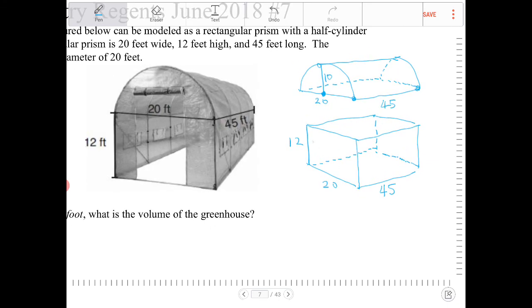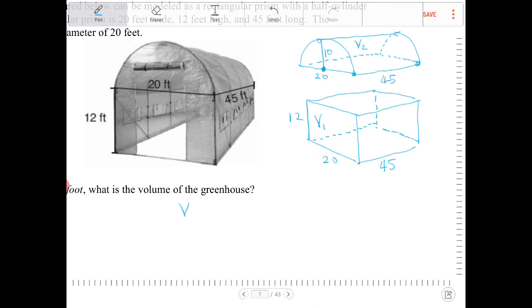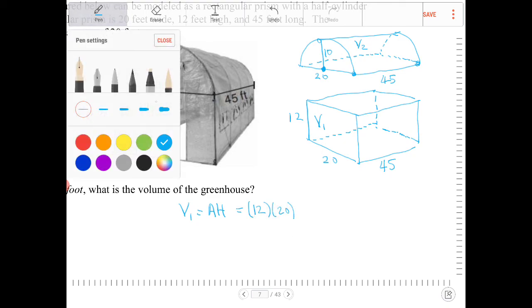We're going to figure out the volume. I'm going to call the volume of the rectangular prism V₁ and the volume of the semi-cylinder V₂. For V₁, the rectangular prism, and for any prism, it's going to be the area times the height—the cross-sectional area times the lateral height. So this is going to be 12 times 20, that's the face right here.